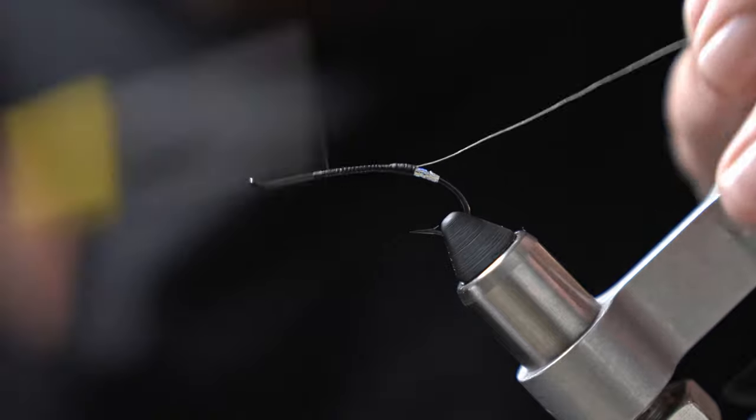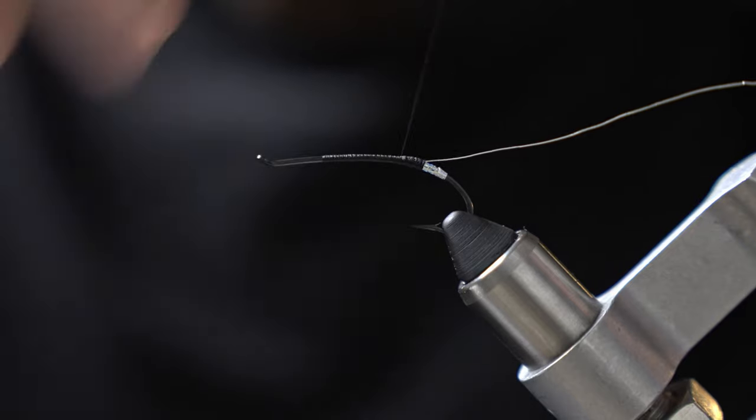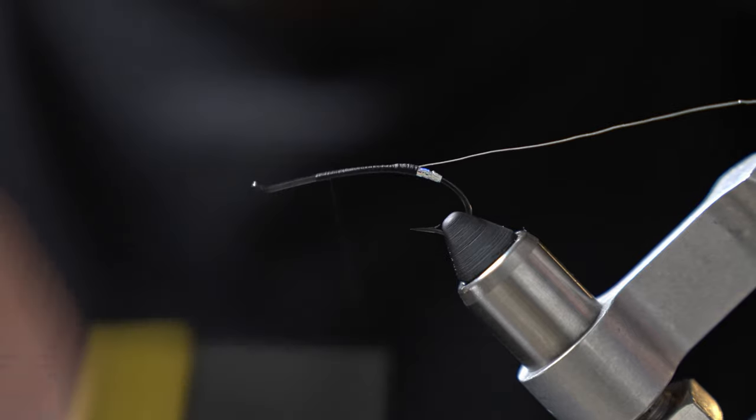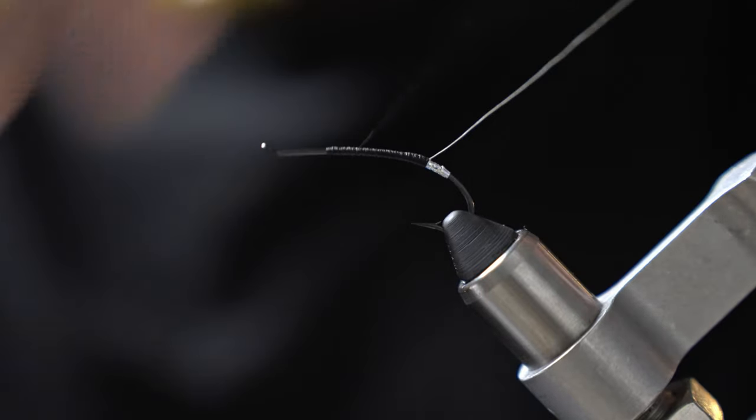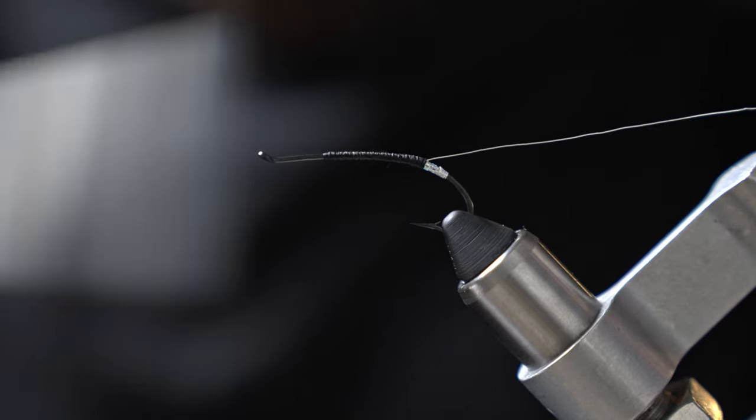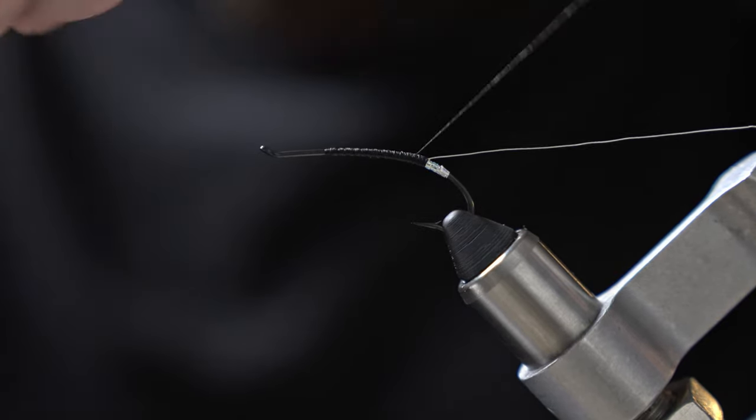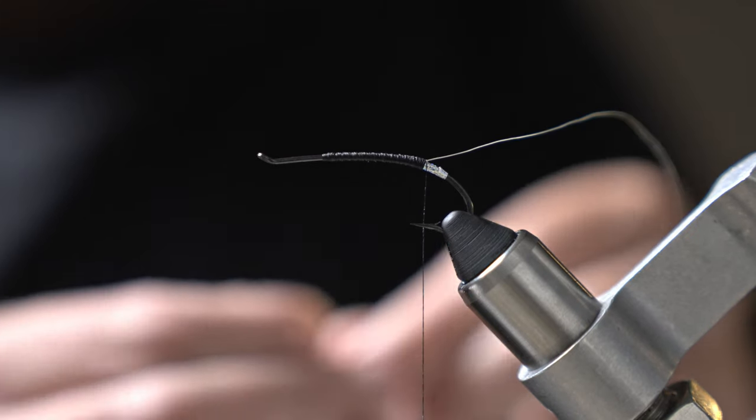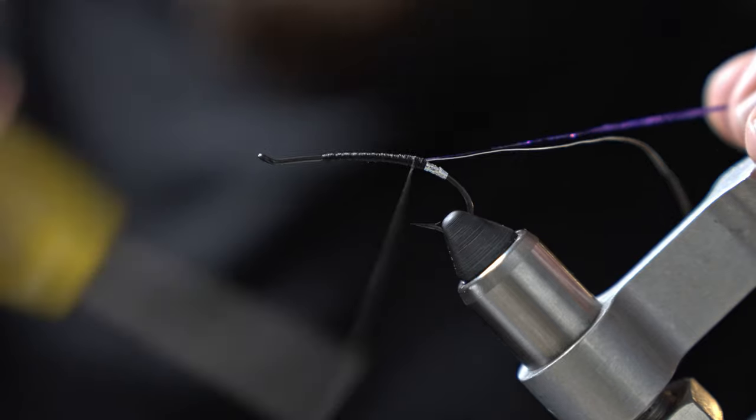And next we're going to tie in a different color of tinsel to wrap the body. But we've got a bit of a bump back there now from tying in the wire and that holographic tinsel. So I'm just laying some thread down to even up the body. One of my favorite things about tying these types of flies are in a lot of cases we're not trying to match any hatches or tie something that looks particularly buggy. So I think it's one of the more creative styles of flies you can tie. There's no rules. You just kind of tie something that looks good to you, something you have confidence in.